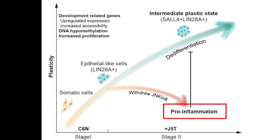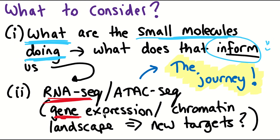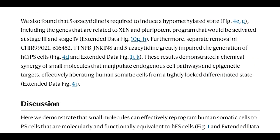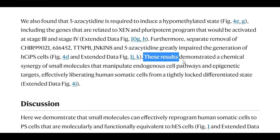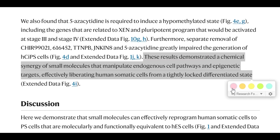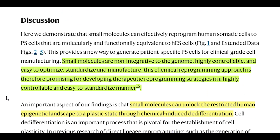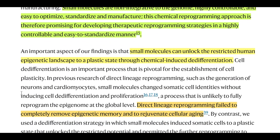In conclusion, these results demonstrated a chemical synergy of small molecules that manipulate endogenous cell pathways and epigenetic targets, effectively liberating human somatic cells from a tightly locked differentiated state. An important aspect of the findings is that small molecules can unlock the restricted human epigenetic landscape to a plastic state through chemical-induced de-differentiation.